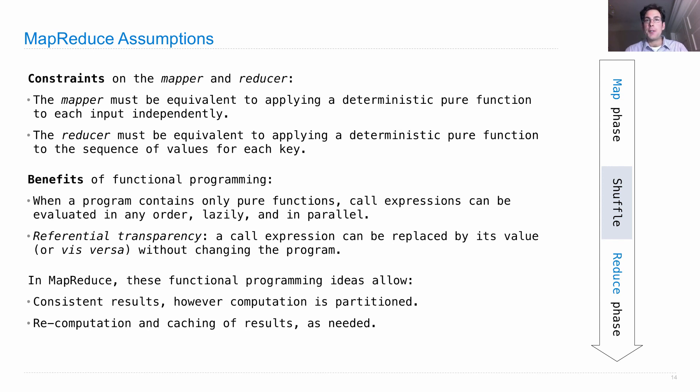Or if it turns out that we've already computed part of the answer in a previous run, then the MapReduce system can cache those results and give them back to us without having to recompute them, because it knows via referential transparency that it will get the same answer.